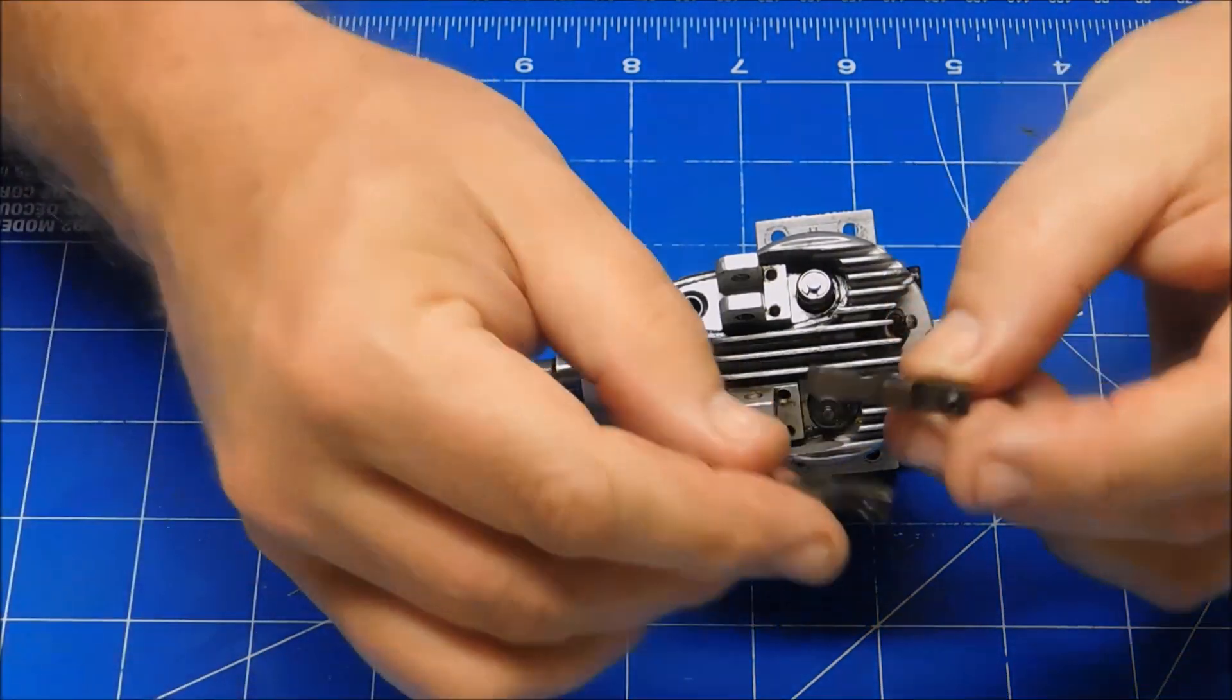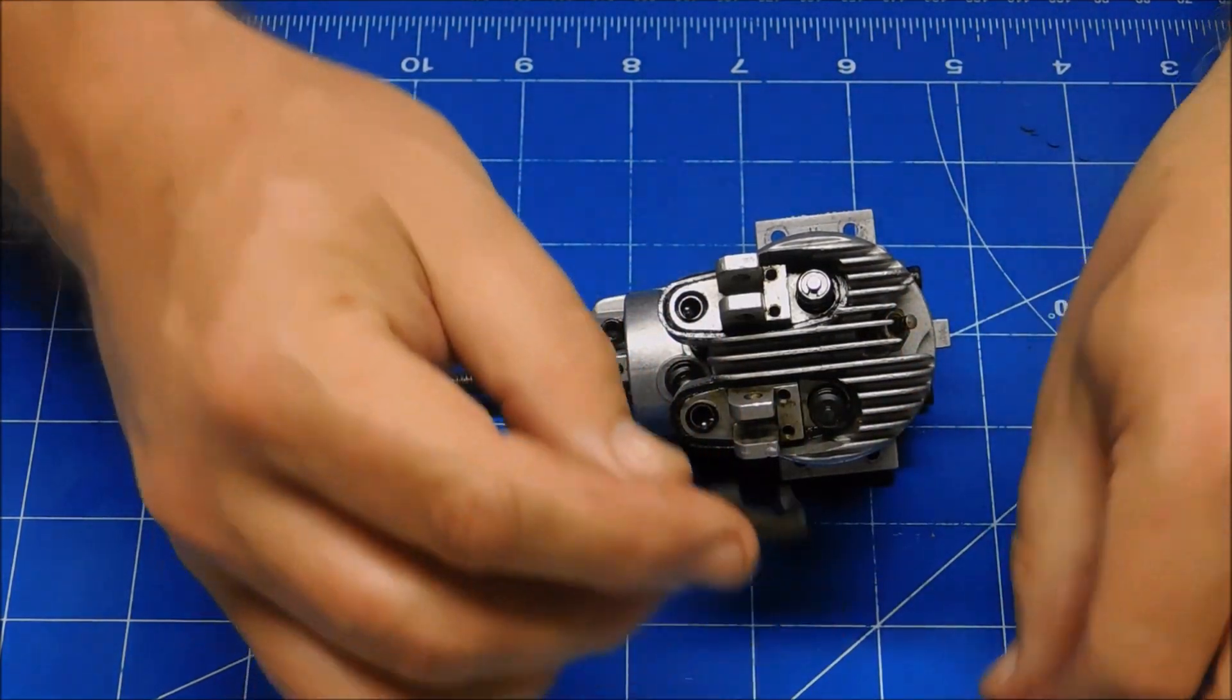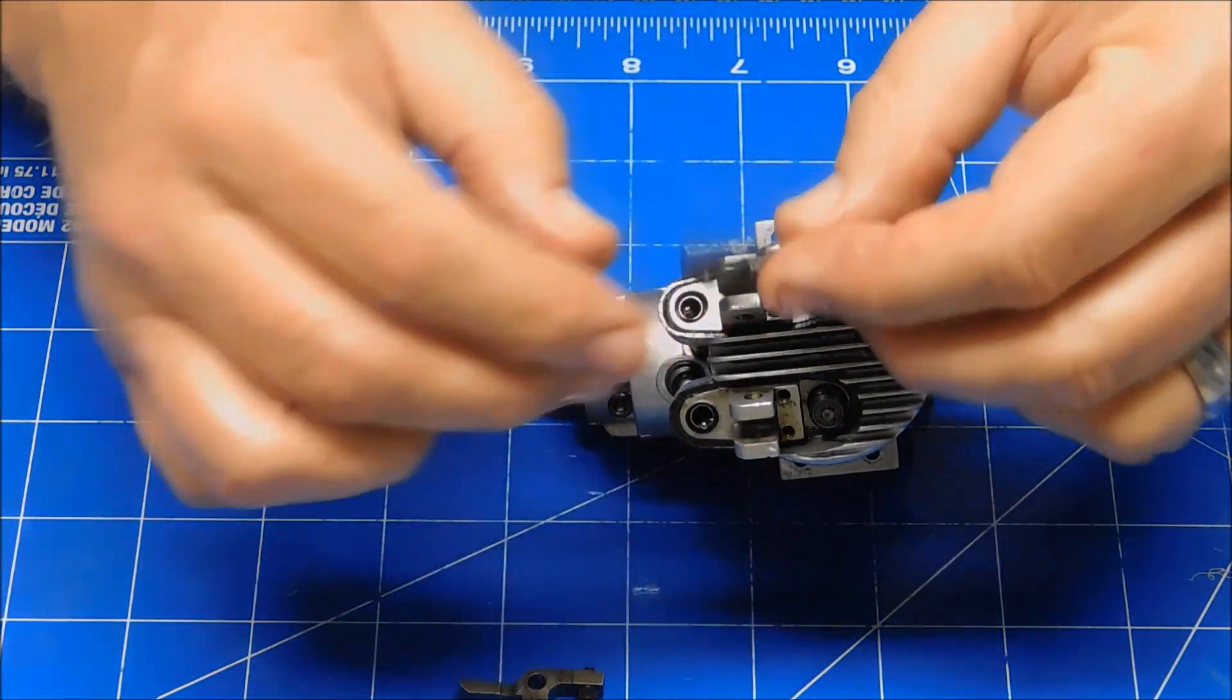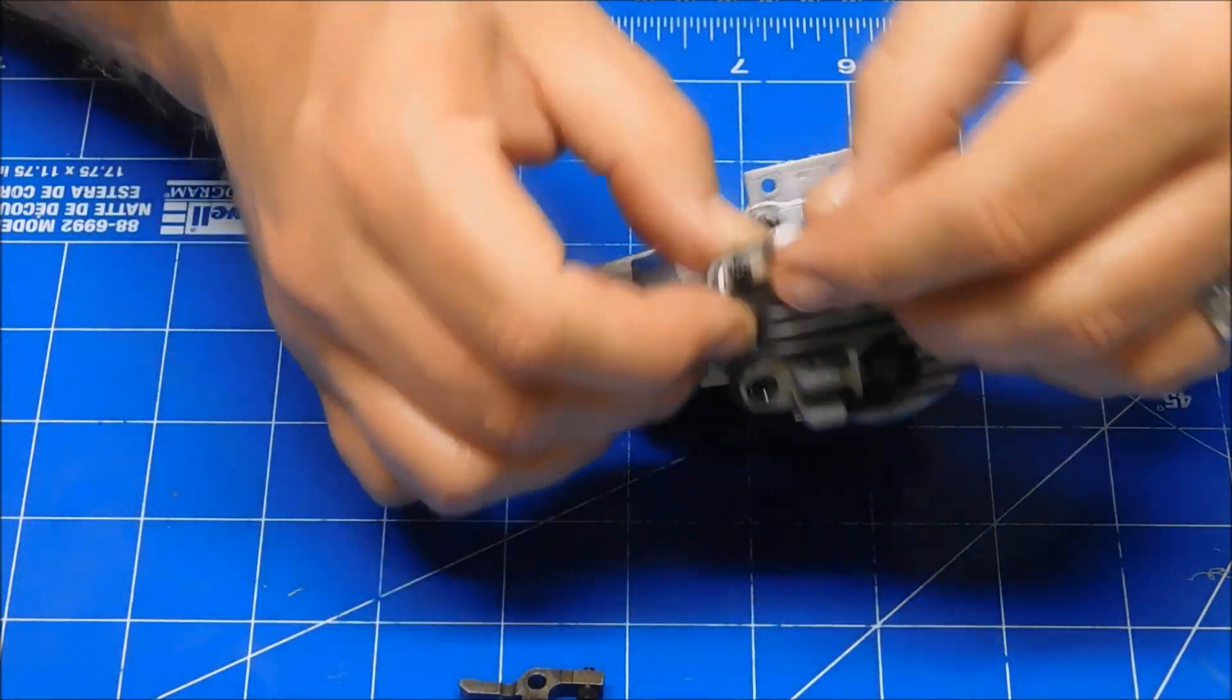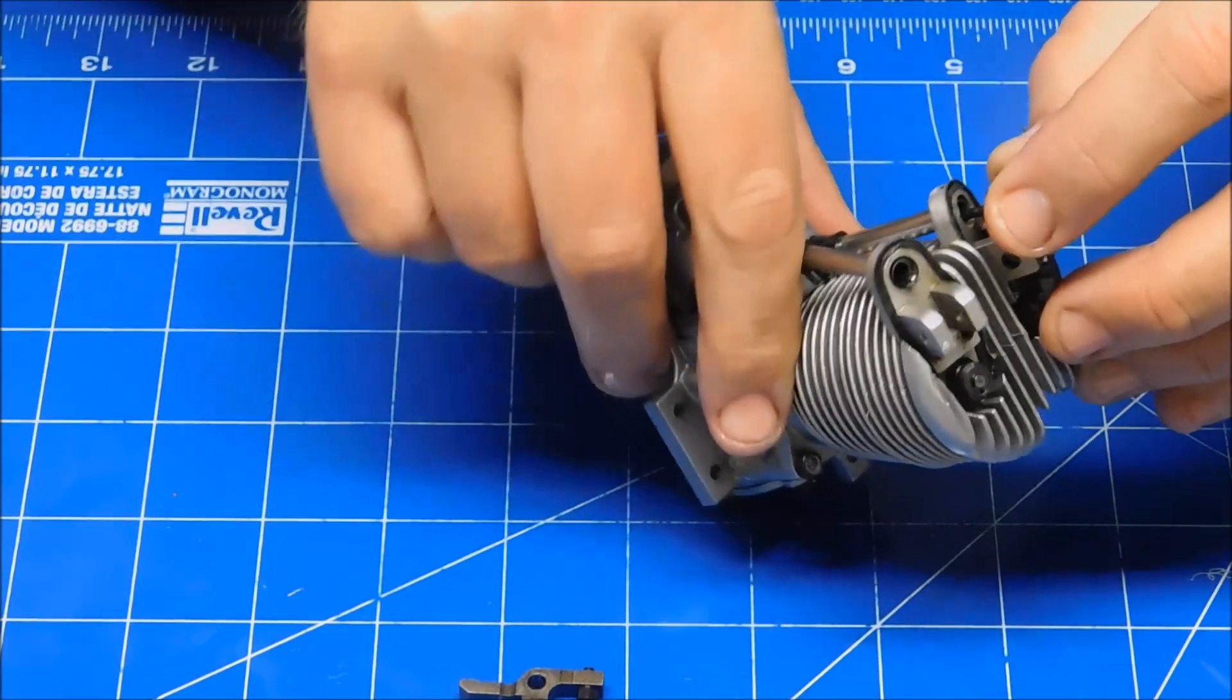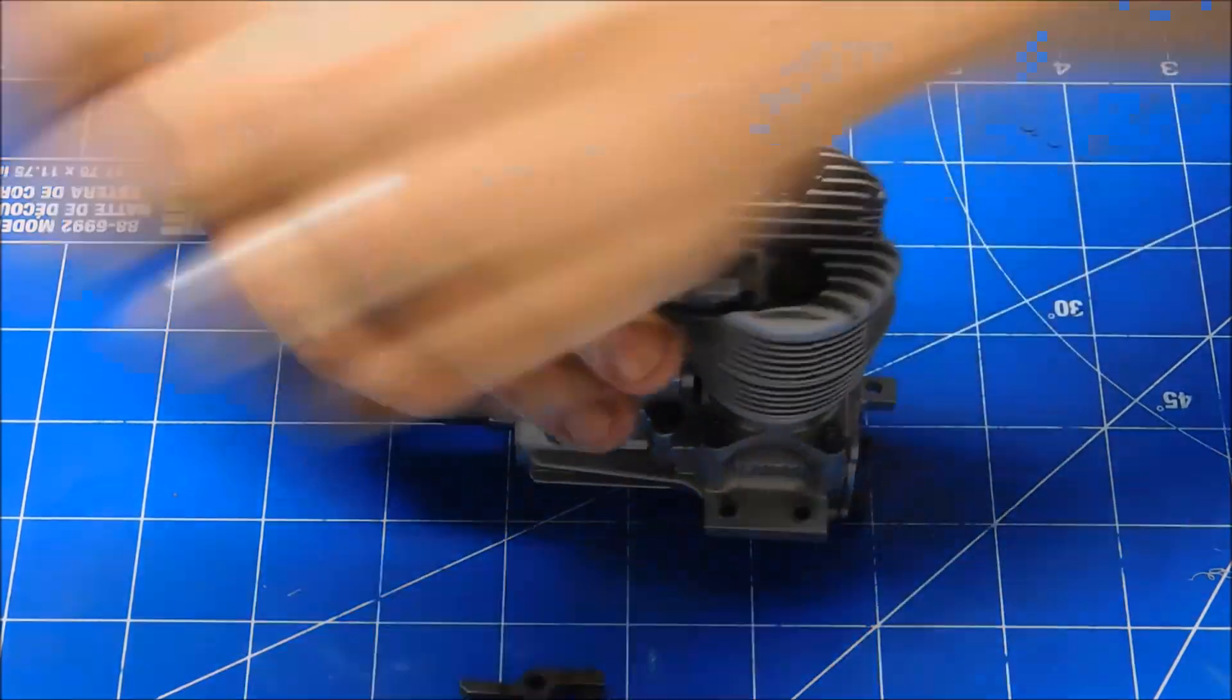Now I don't know which one of these rocker arms was which. It doesn't really matter because I'm going to be resetting the timing anyway. So I'll make sure I get that push rod engaged in there.